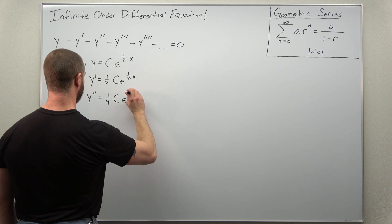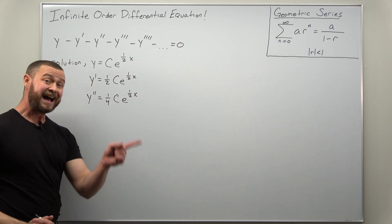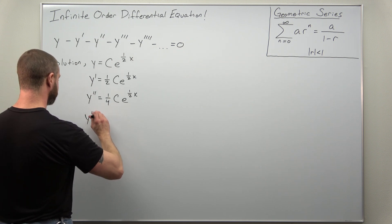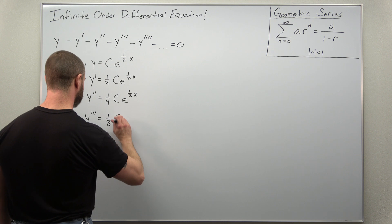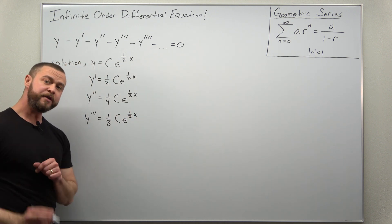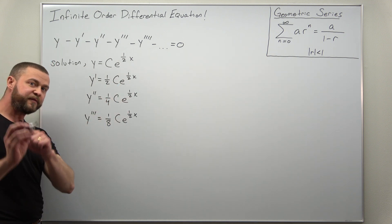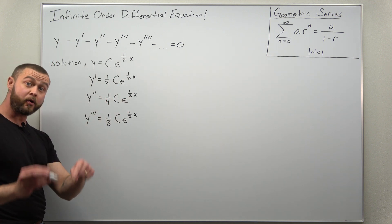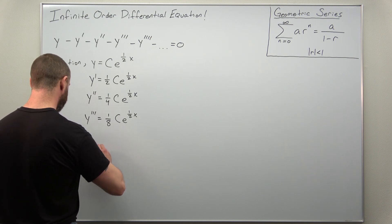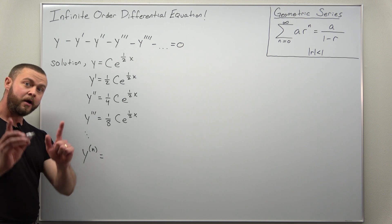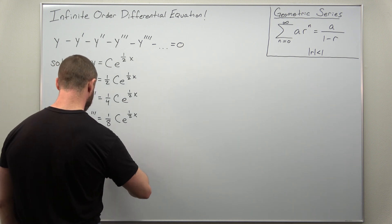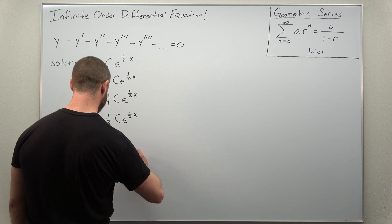Differentiating once more gives another factor of one half, so the third derivative is one eighth c e to the one half x. At this point you can probably see the pattern — all derivatives are one over a power of two times c e to the one half x. The nth derivative fits the pattern: one over two to the n, times c e to the one half x.